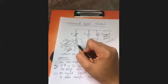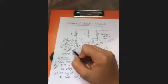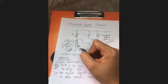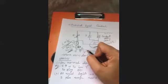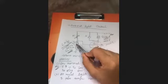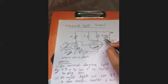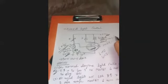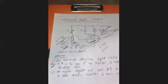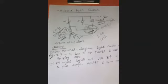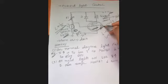When there is no light, LDR resistance is maximum, so the current through the LDR path is minimum. However, current flows through the MOSFET, turning it on. The MOSFET then activates the relay, which in turn switches on the AC load through the relay contacts.